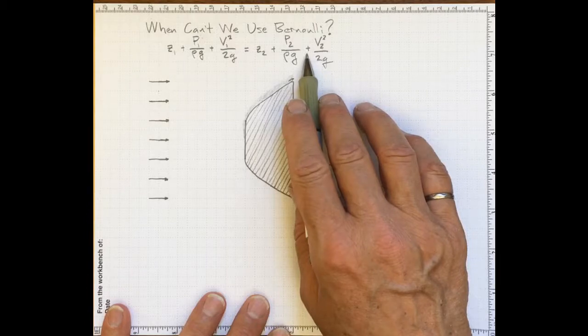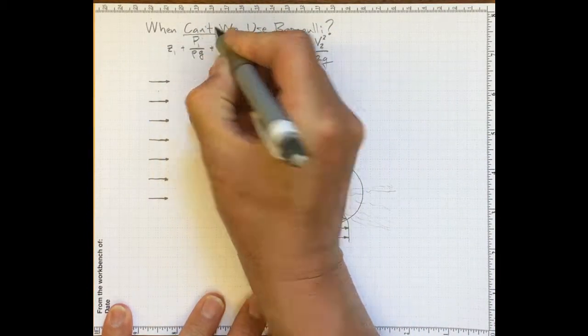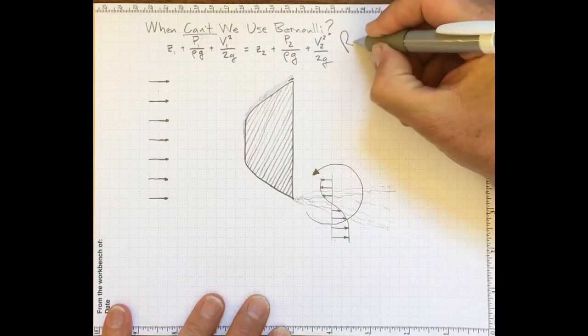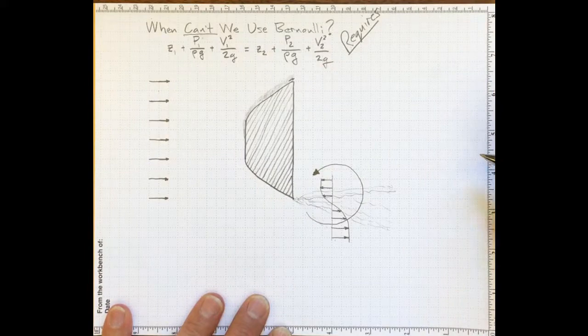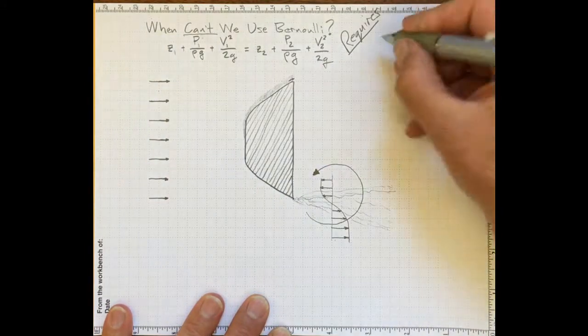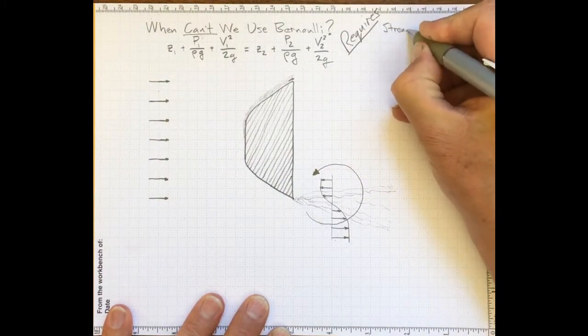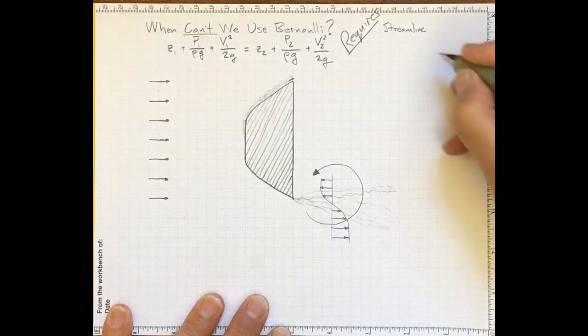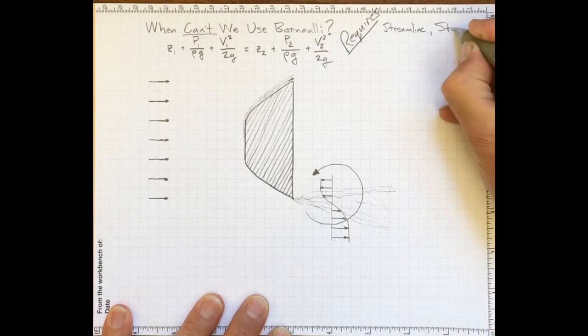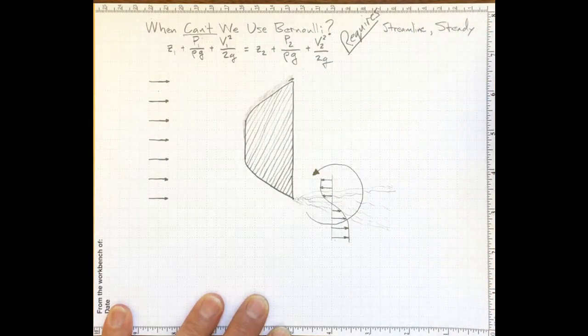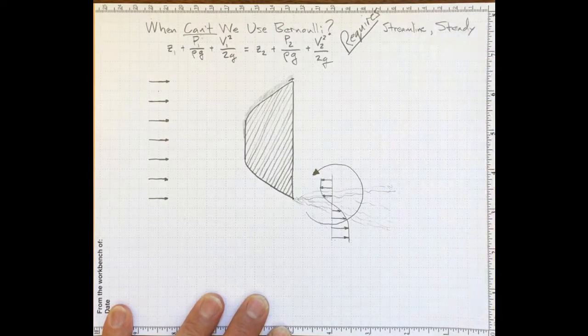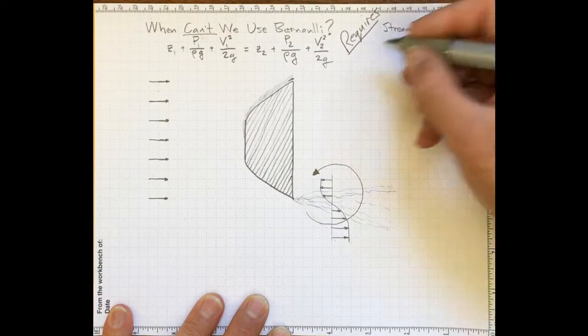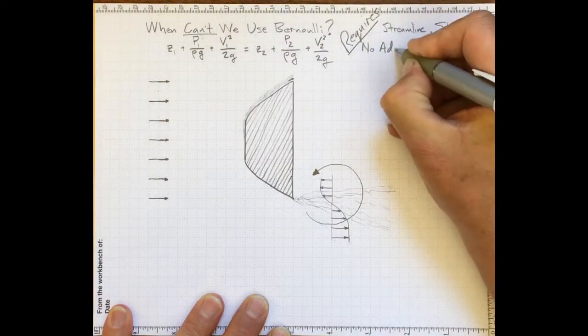We derived Bernoulli's equation. Now the question is, when can we use it, and when can't we use it? Bernoulli's equation has some requirements. You can only apply Bernoulli's equation on a streamline, in steady flow.